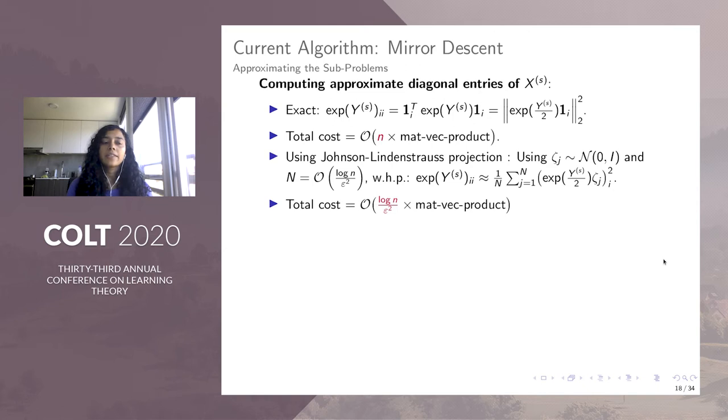Now, in order to compute these diagonal entries, you can write the diagonal entries of X of Y in this manner as a norm squared of a matrix vector product. And so for all the N diagonal entries, the total cost is given by N times the matrix vector product. But because this is a matrix vector product here, you can speed up the computation of it by applying Johnson-Lindenstrauss Lemma. And that reduces the cost of computing these approximate diagonal entries from N times the matrix vector product to log N over epsilon squared times the matrix vector product.